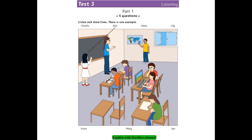1. Who's the boy with the curly hair? Which one? There are two. The one who's pointing to the map. Oh, that's Charlie. He likes maps. Why? He wants to travel round the world.